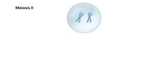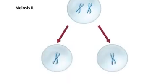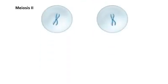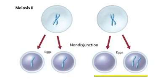Non-disjunction can also occur during meiosis 2. In this scenario, meiosis 1 occurs normally. When the daughter cells separate during meiosis 2, one daughter cell divides normally, but the other daughter cell divides abnormally.